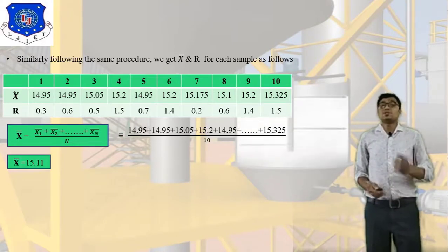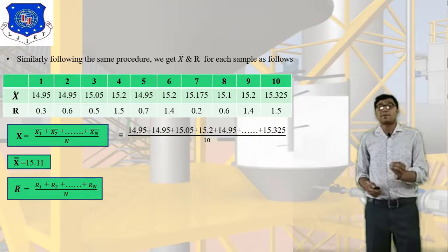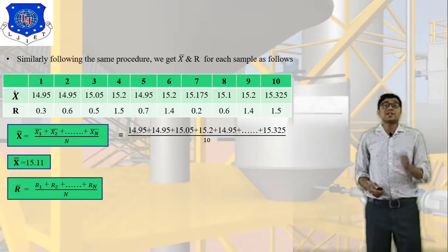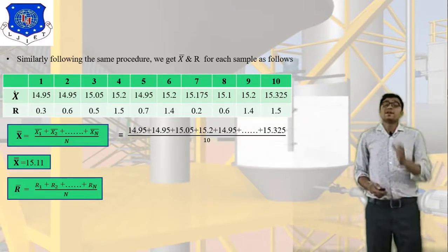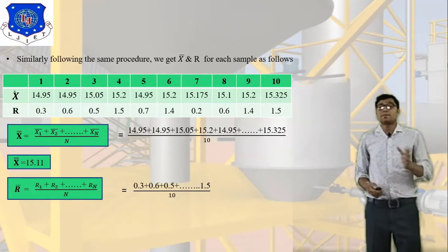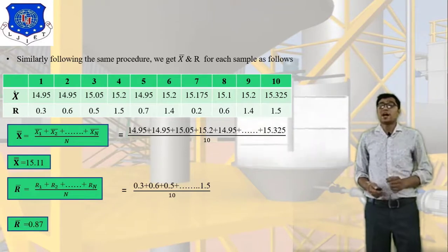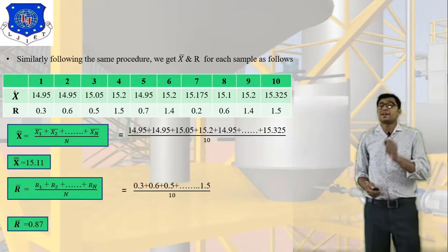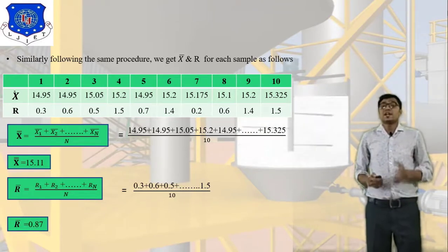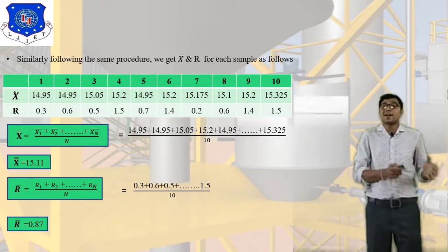Now calculate R-bar: R-bar = (R1 + R2 + ... + R10) / 10 = (0.3 + 0.6 + 0.5 + 1.5 + 0.7 + ... + 1.5) / 10, giving R-bar = 0.87. This completes step 3.